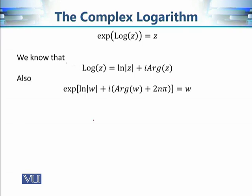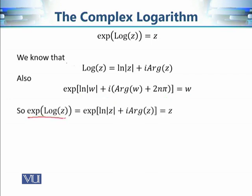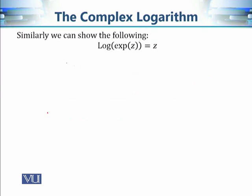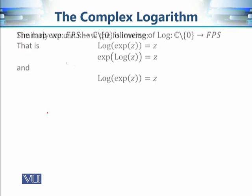By our basic knowledge of inverse functions, both compositions must equal the identity. The principal value of the logarithm is Log(z) = ln|z| + i·Arg(z). Using this, we compute the composition e^{Log(z)}: substituting the value of Log gives e^{ln|z| + i·Arg(z)}, which equals z. So the composition of the exponential and the principal value of log is the identity. Similarly, the other composition is also z.